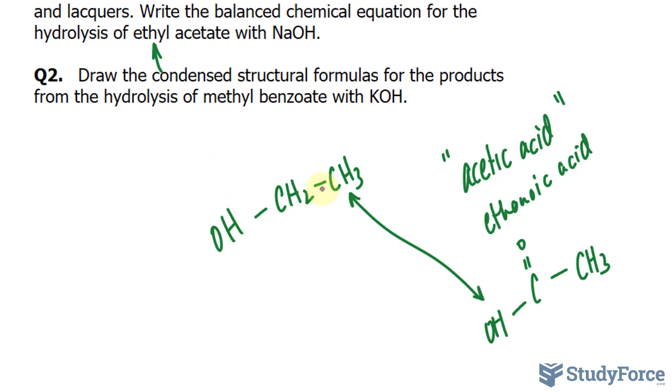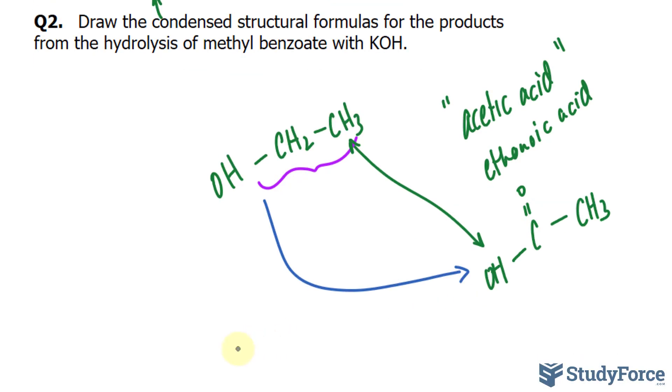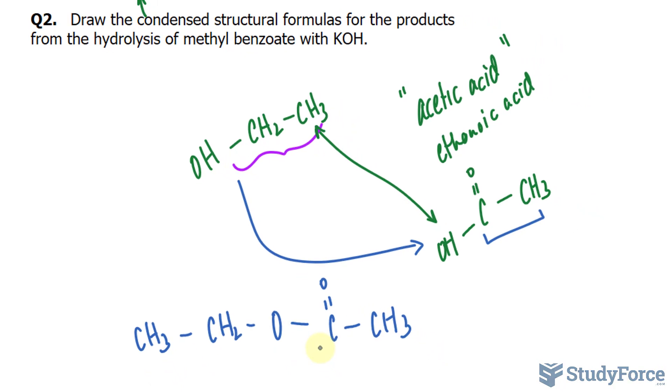What happens is we have a linkage of this part to the carboxylic acid. So specifically we have CH2 and CH3, that's this part, single bonded to oxygen, and that's single bonded to this part of the molecule. So this is what ethyl acetate looks like, what you see here. And we have the ester bond right here.